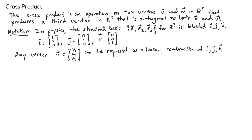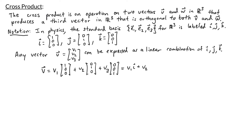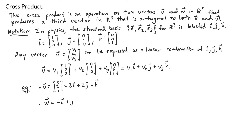Any vector v with entries v1, v2, v3 can be expressed as a linear combination of your standard basis vectors. Specifically v can be expressed as v1 times (1,0,0) plus v2 times (0,1,0) plus v3 times (0,0,1). Rewriting this in terms of i, j, k this is v1·i + v2·j + v3·k. For example the vector v with entries (3,2,1) can be expressed as 3i + 2j + k. And a vector w expressed as -i + j + 2k can be thought of as the vector (-1, 1, 2).